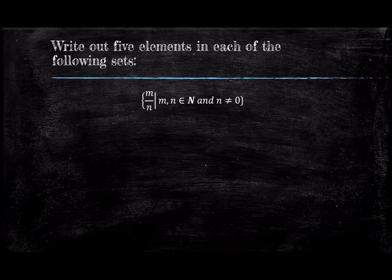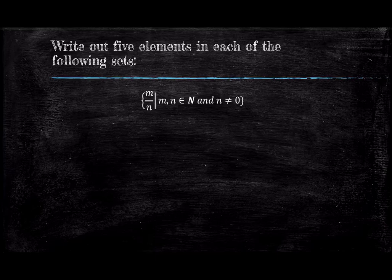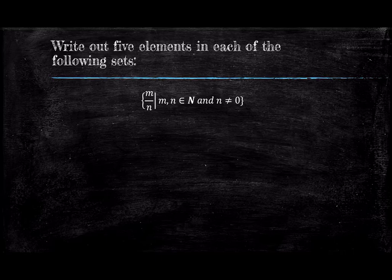On to another example. Let's work on reading set builder notation and writing out its elements. This example is the set of all values m over n, where m and n are in the naturals. Naturally, these numbers will include a lot of fractions. Because our m and n range over all naturals, we can't list out the whole set. While any choices of m and n are as good as another, we're asked to just practice with a choice of five values.